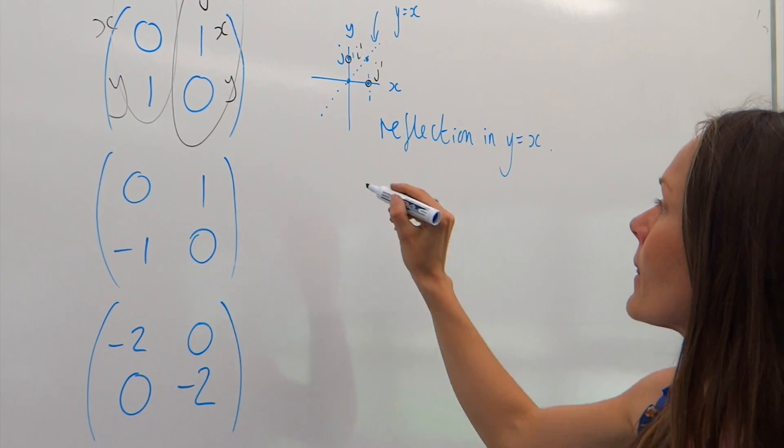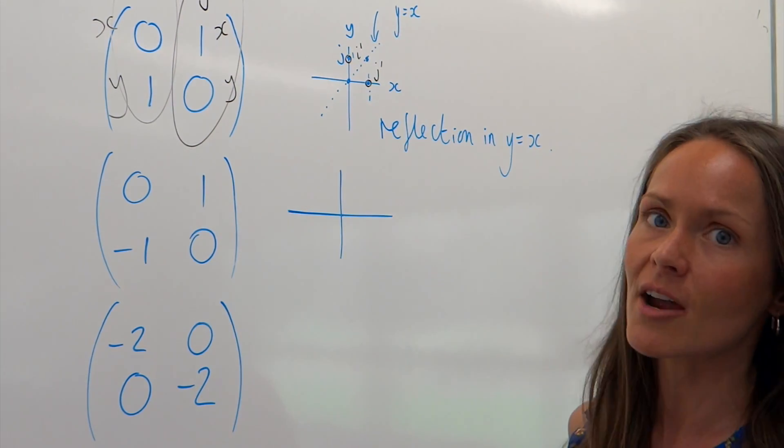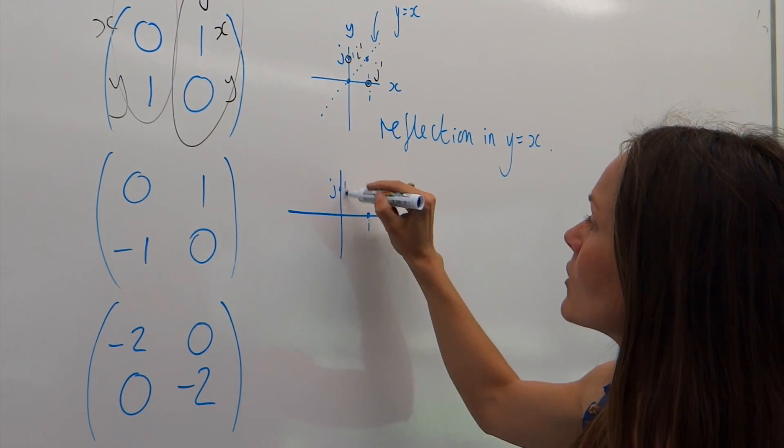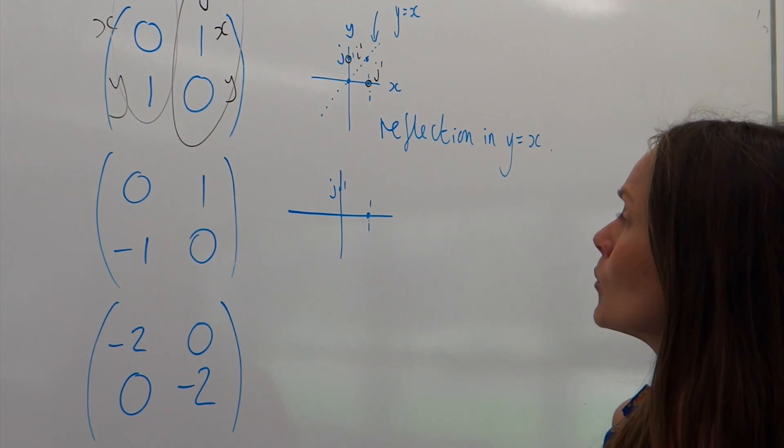So, on to the next one. Again, I'm going to draw my little diagram, and I'm going to show i and j. And just remember, j is always one unit up, and i is always one unit along.